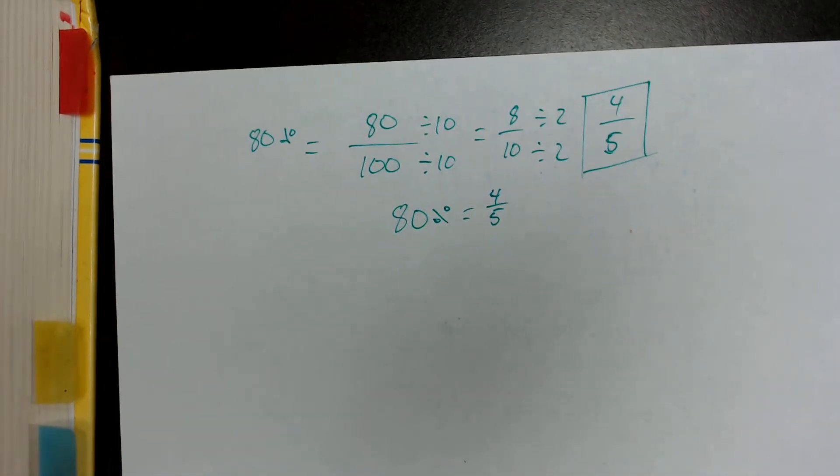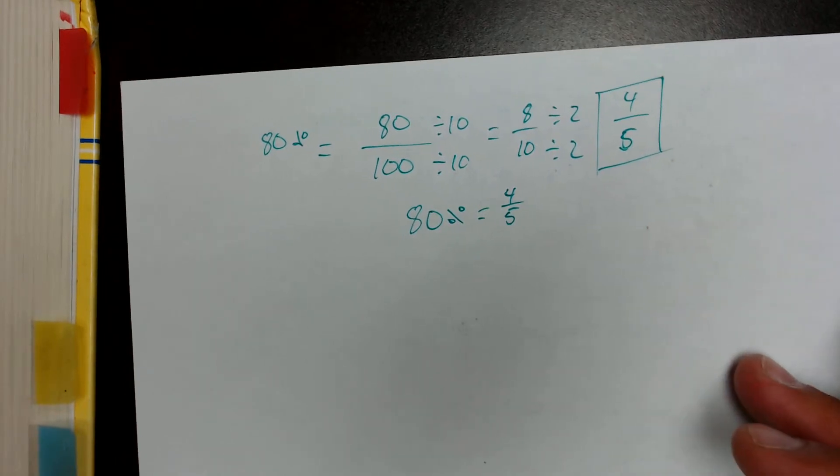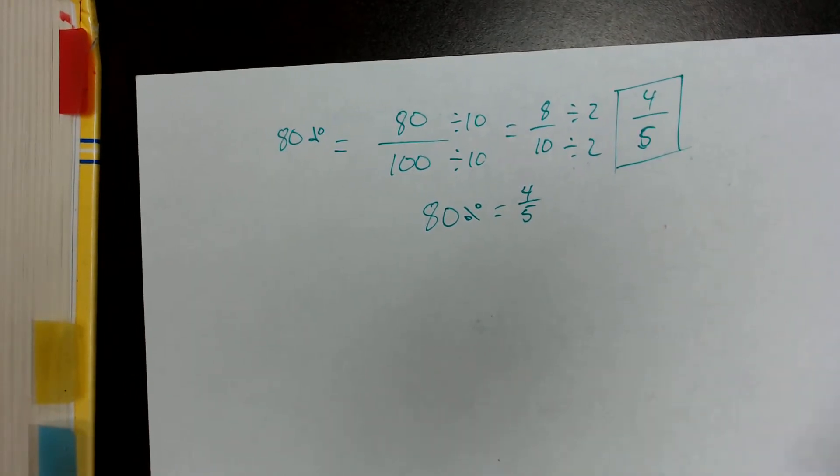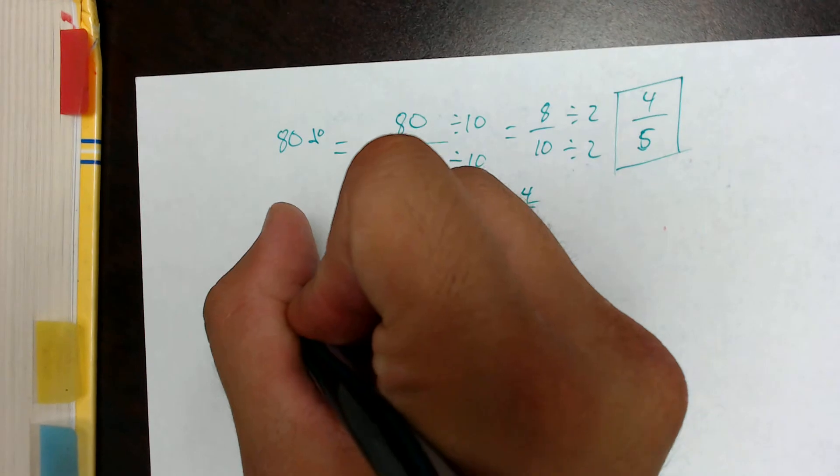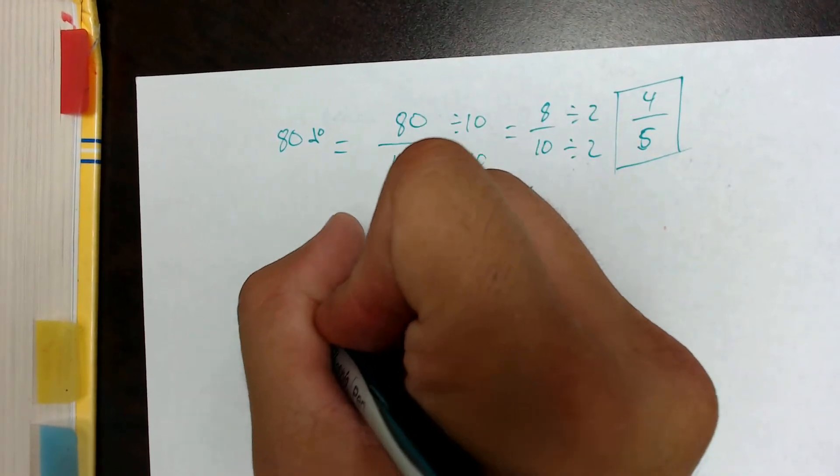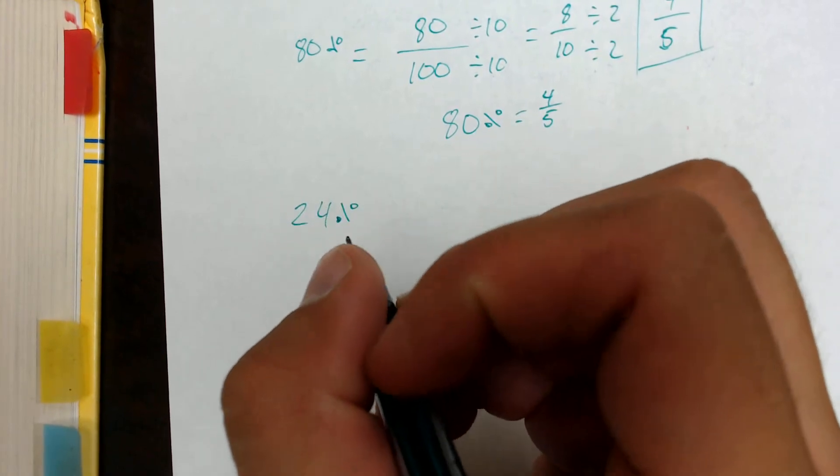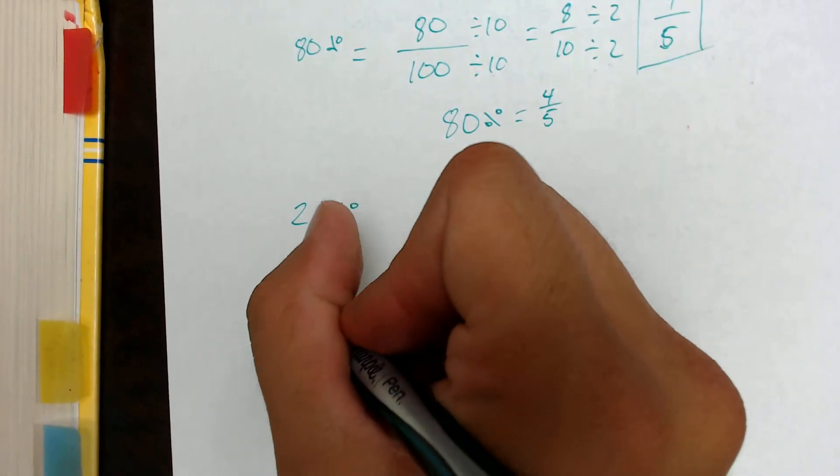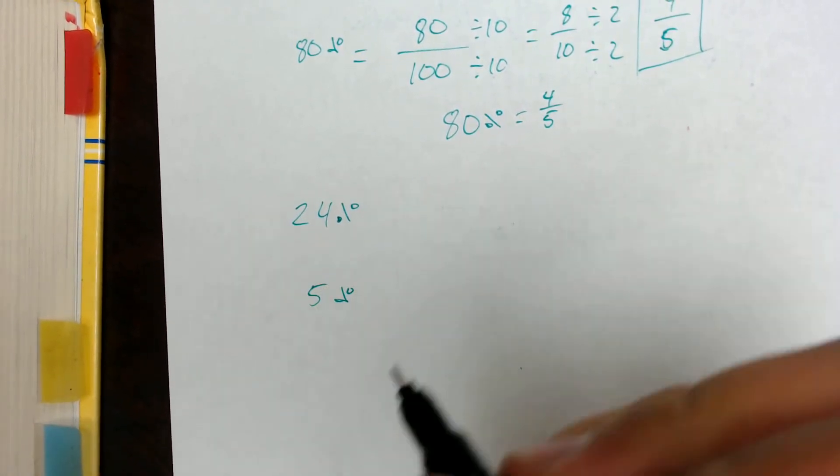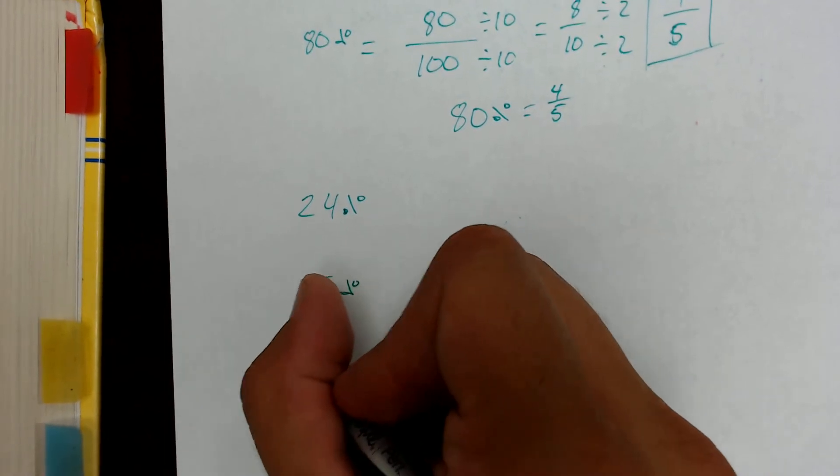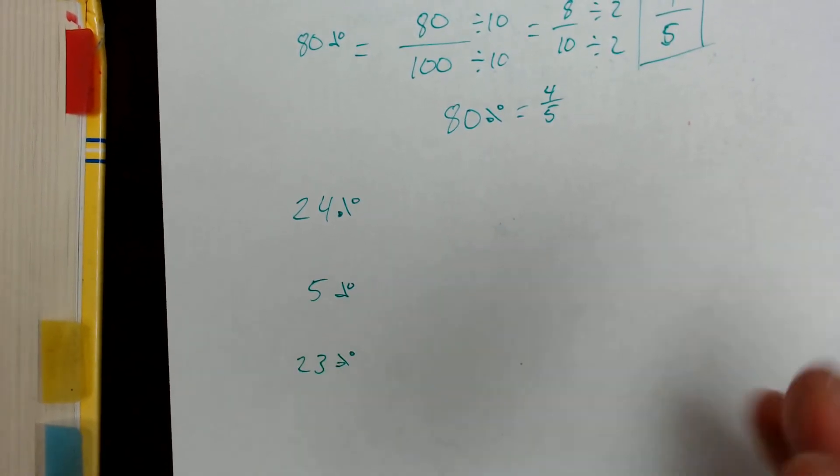Let's do a couple more examples here so we can get you guys a good feel for how this is going to work. We'll take some oddball numbers. We'll take 24%, and then we'll do 5%, and then we'll do 23%.